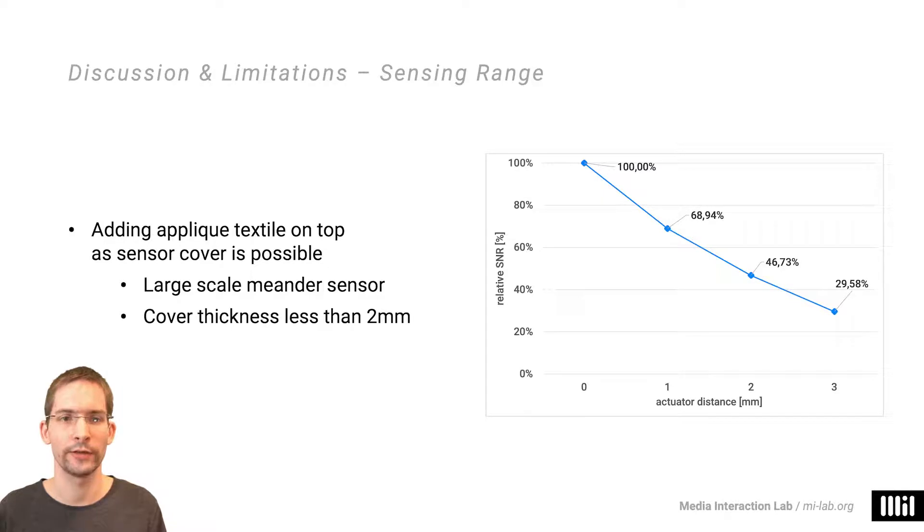Lastly, we also evaluated the effective sensing range of our sensor grids by performing SNR measurements at varying distances to the sensor. Given these results, we estimate that robust sensing at a distance of 2 mm could still be realistic for a large-scale meander matrix, therefore allowing for thin oblique textile covers on top of the sensor grid.